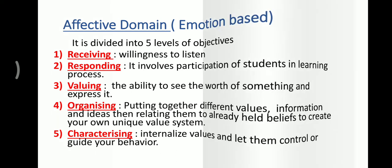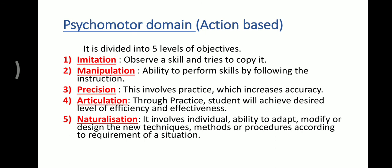Now we will discuss the third domain: the psychomotor domain, which is action-based. The first level is imitation — a student observes a skill and tries to copy it. The second level is manipulation — the ability to perform a skill by following instructions. The student first observed and copied the skill, and now has the ability to perform it again, manipulating it by experimenting with various aspects.